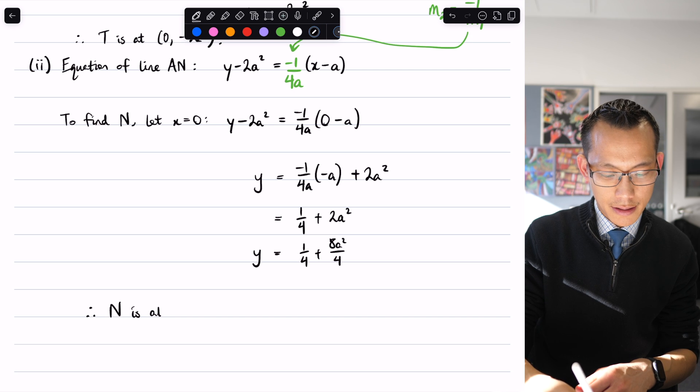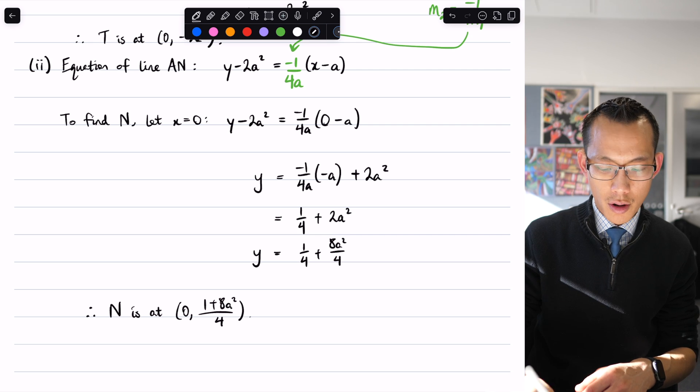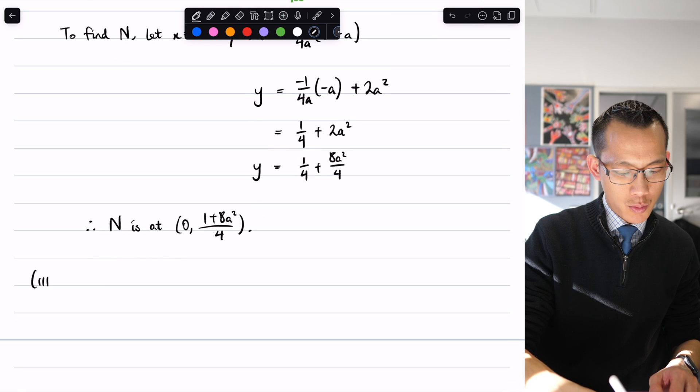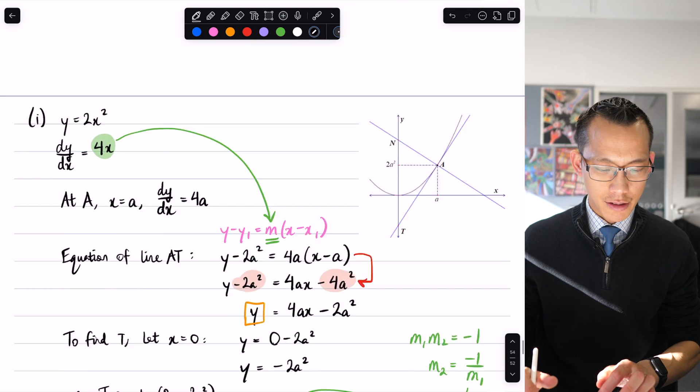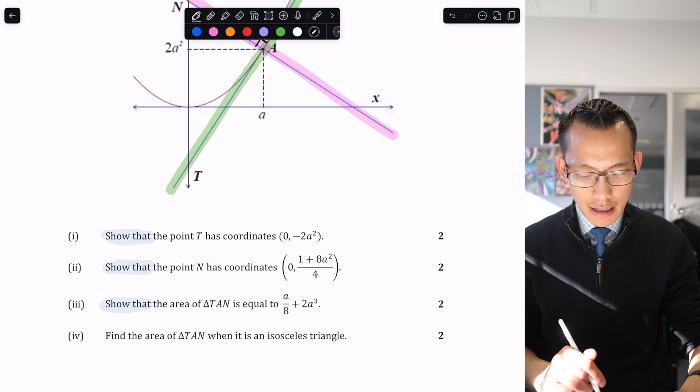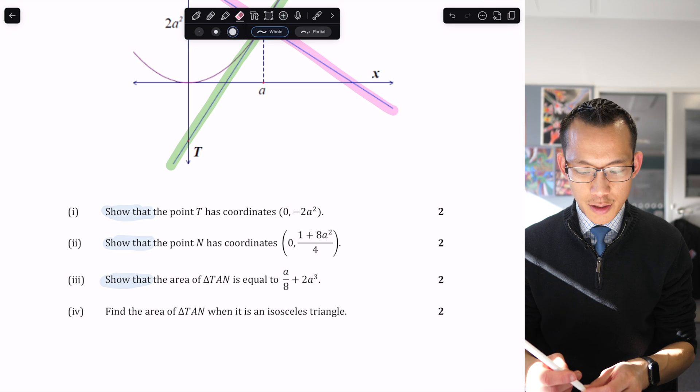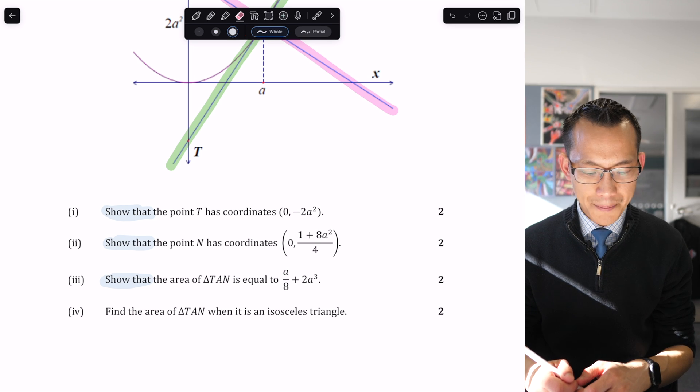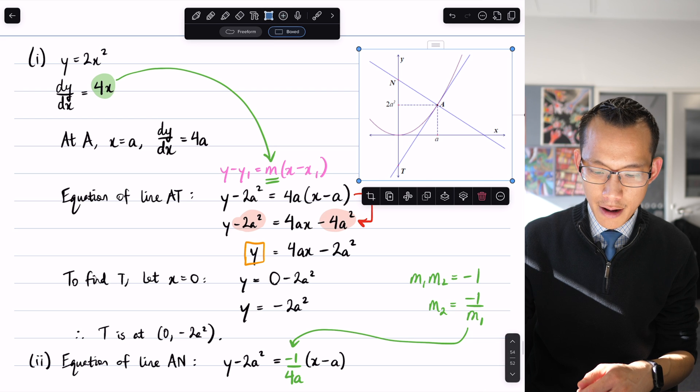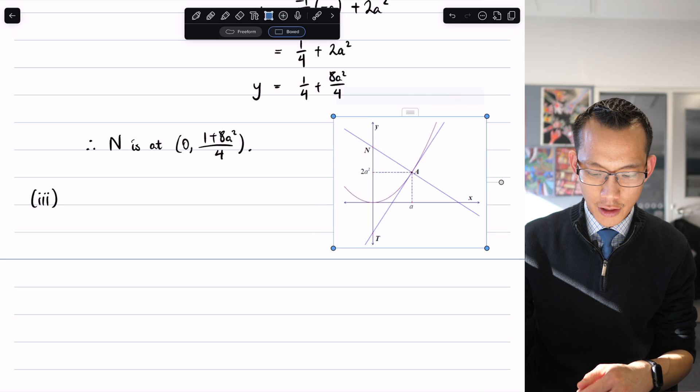Therefore N is at 0 comma 1 plus 8a squared over 4. So we're moving on to part 3, and this is where it starts to introduce this triangle business. Let's look back at the question. It says show that the area of triangle TAN is equal to—and just like we've seen in parts 1 and 2, they provide us with a solution so we know we don't need to go hunting for what that answer is. What's the best way to work out the area of triangle TAN?